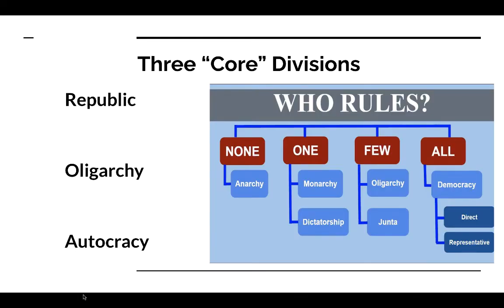Most governments are broken into three broad-based categories today. We've got a republic, which falls under forms of democracy, whether direct or representative, although no one really has direct democracy anymore. You have an oligarchy, which is typically a rule by just a few people, taking a variety of forms — whether it's a small group of unelected leaders, military juntas, or even the former Soviet Union or modern-day communist China.